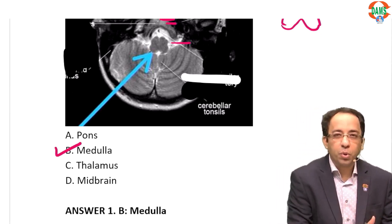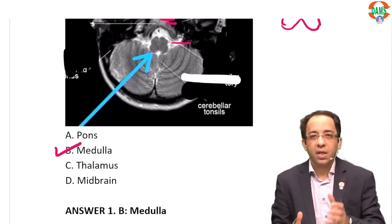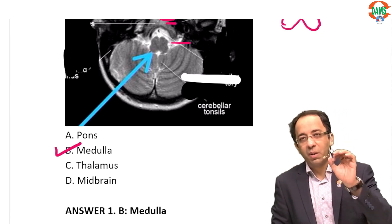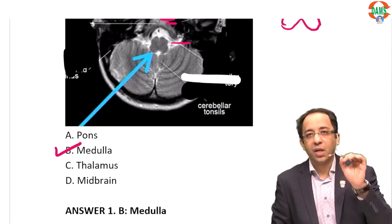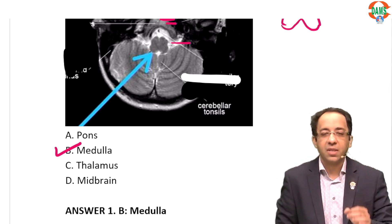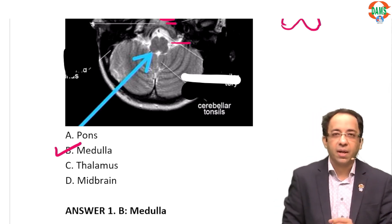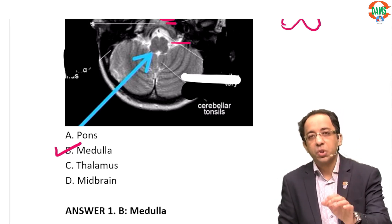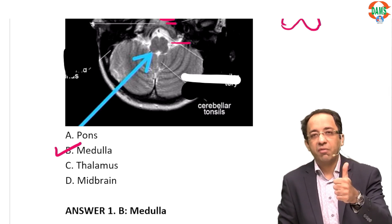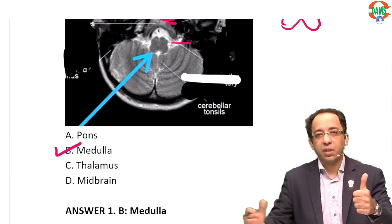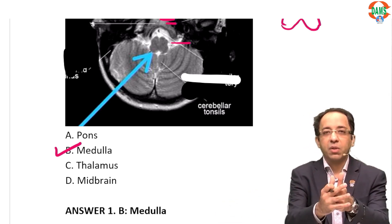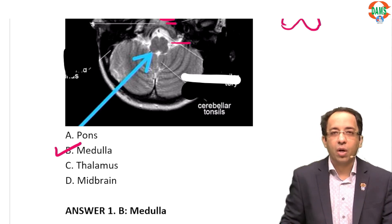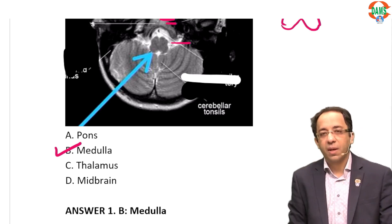Some of you might think this is difficult, but it is easy — this is the actual style of question in the FMG exam. They like asking questions based on identifying anatomy, so that radiology and anatomy can be tested together in one question.